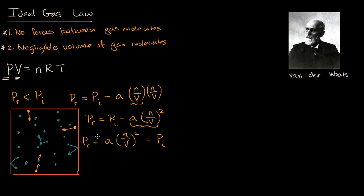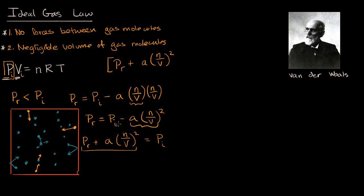Van der Waals said: if I assume this is the ideal pressure, I can replace P_ideal with the expression (P_real + a(n/V)²) in the ideal gas law. So we're slowly reconstructing the van der Waals equation. The real pressure plus a(n/V)² replaces the P term. This makes conceptual sense: the real pressure is less than the ideal pressure, or equivalently, the ideal pressure is the real pressure plus a correction related to the density of molecules and a constant A that captures the strength of attractive forces. Only positive A values are seen for actual gases, reflecting attractive forces.